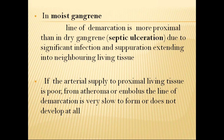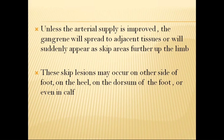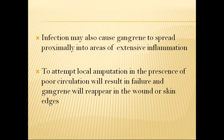This is the key difference in how dry gangrene and wet gangrene develop and progress. Unless the arterial supply is improved, the gangrene will spread to adjacent tissues or suddenly appear as skip areas further up the limb. These skip lesions may occur on the other side of the foot, on the heel, on the dorsum of the foot, or even in the calf. Infection may also cause gangrene to spread proximally into areas of extensive inflammation. Attempting local amputation in the presence of poor circulation will result in failure and gangrene will reappear in the wound or skin edges.